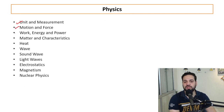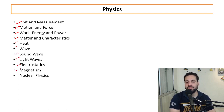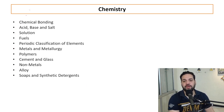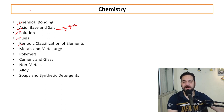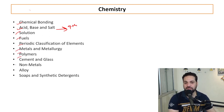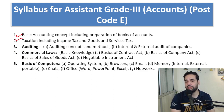For Physics, the topics are: units and measurement, motion and force, work, energy and power, matter and characteristics, heat waves, sound waves, light waves, electrostatics, magnetism, and nuclear physics. For Chemistry, topics include: chemical bonding, acids, bases and salts, solutions, fuels, periodic classification of elements, metals and metallurgy, polymers, cement and glass, non-metals, alloys, soap and synthetic detergents.